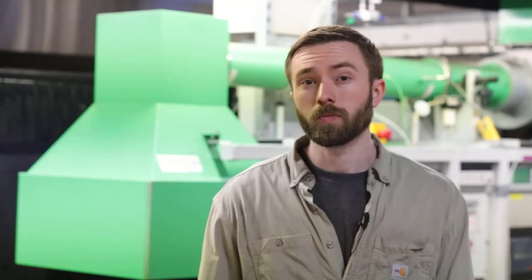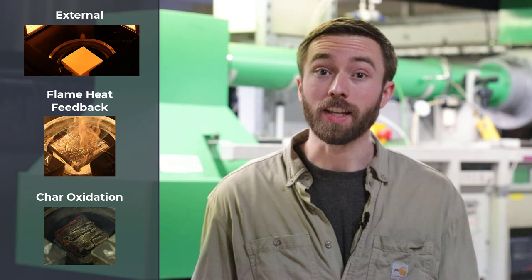Looking at this energy balance we have three key sources of heat entering the timber specimen: external heating, flame heat feedback, and char oxidation. We will be defining flame heat feedback as essentially the net contribution of the presence of a flame sheet, which includes radiation, convection, and gas phase conduction. We'll also be defining the char oxidation term as essentially any heat transfer that is being caused by the secondary oxidation reaction going on within the char layer.